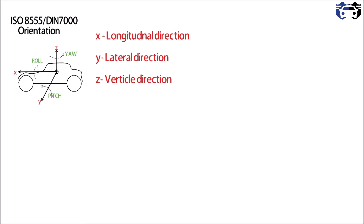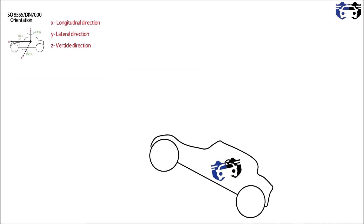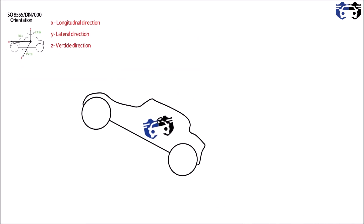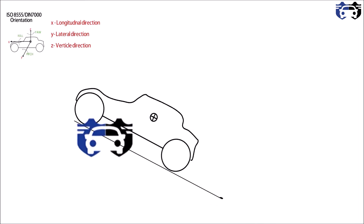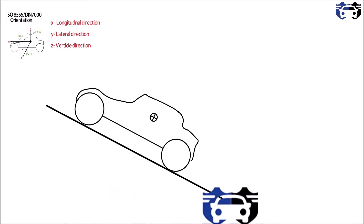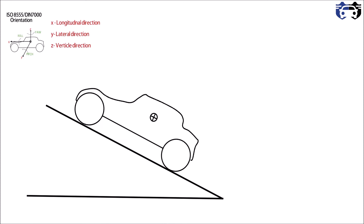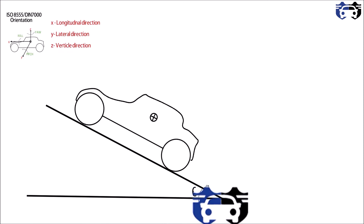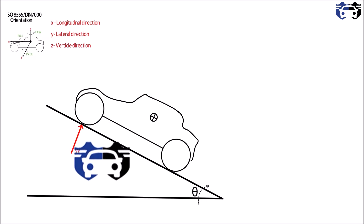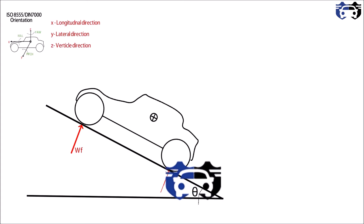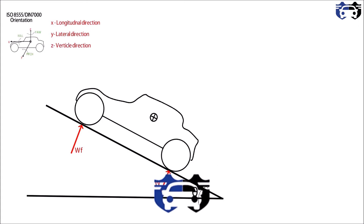Now let's see the weight transfer derivation. We are going to first see the diagram, understand it, then move ahead for the derivation. I am considering the case that the car is going uphill — the ground is making a small angle theta with the horizontal. The front weight is Wf and the rear weight is Wr.